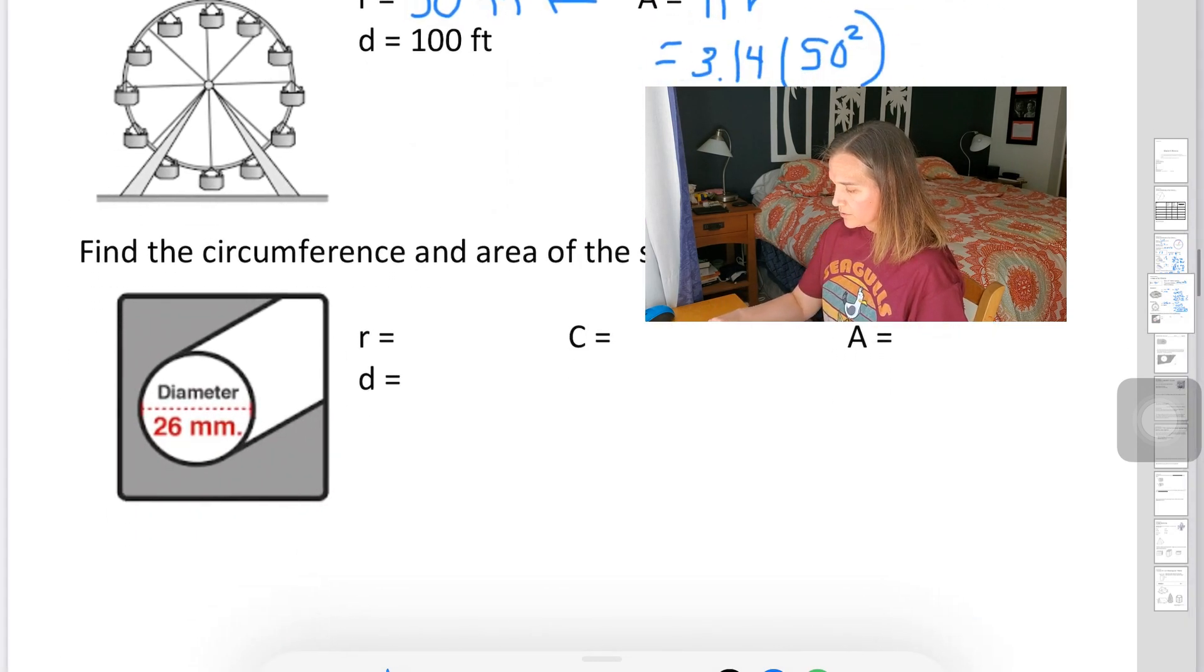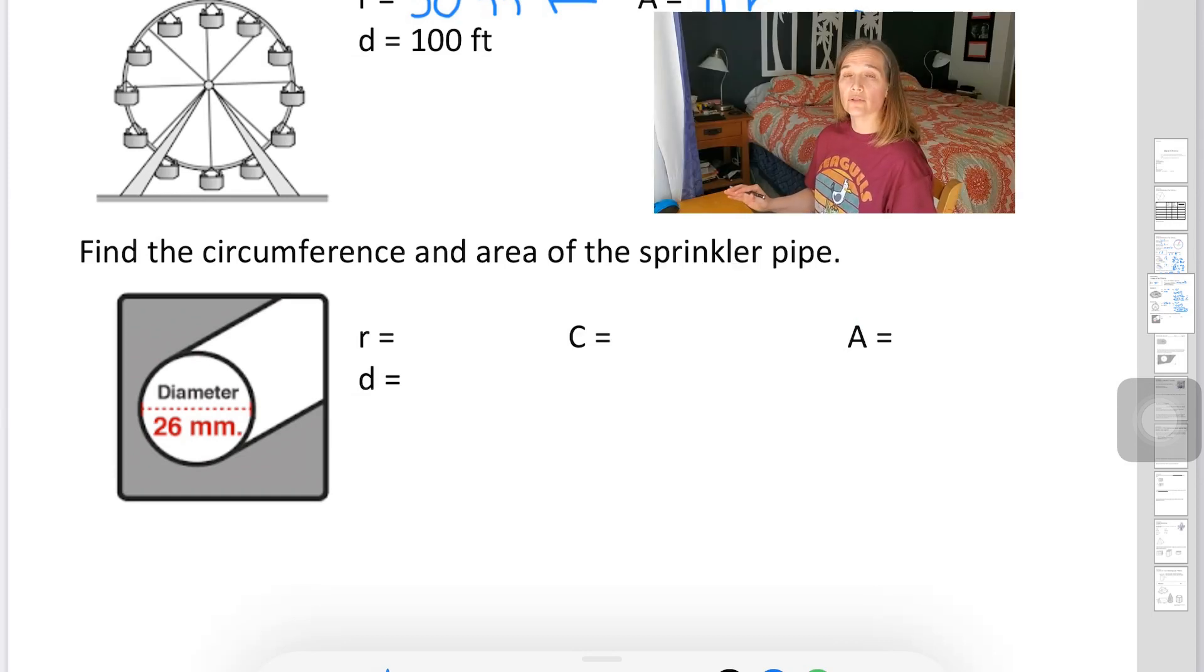All right, we've got one last one. And I told you on the last video that you could also, instead of multiplying by 3.14, just leave pi as the symbol pi and multiply by that. So let's try that on our last problem here. This one, they want us to find both the area and the circumference. So on this one, it tells us our diameter is 26, means our radius is half that or 13.